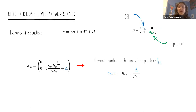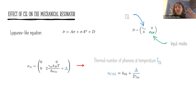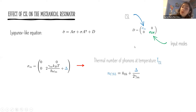The mirror is in contact with an environment at fixed temperature T, so there is a contribution from Brownian motion, and delta is the contribution from assuming a collapse affecting the mechanical resonator. These terms can be described by redefining an effective number of phonons for an effective temperature T given by two contributions: the environmental one and the temperature coming from the CSL effect.